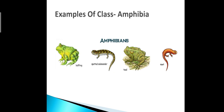With the help of these slides we can understand examples of class Amphibia: the bullfrog, the spotted salamander, the toad, and the newt. These are some examples of Amphibia.